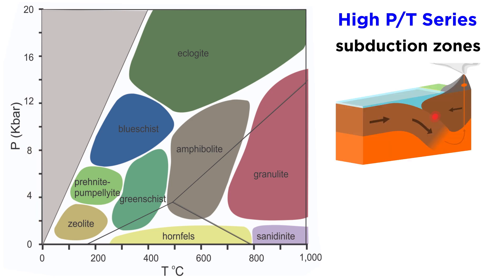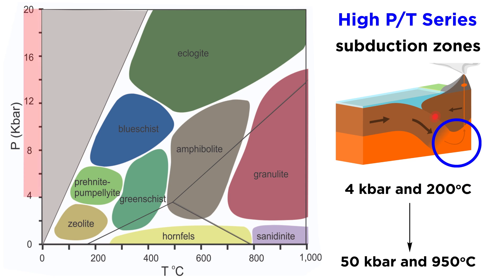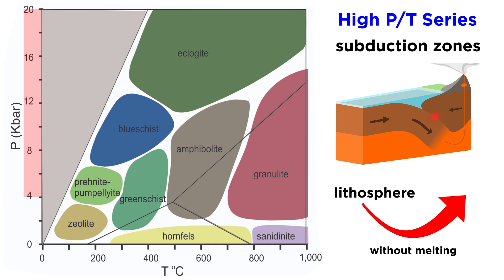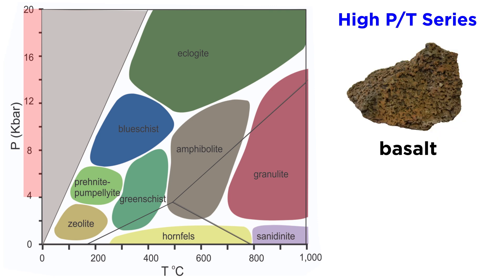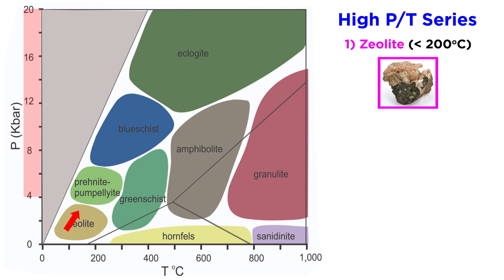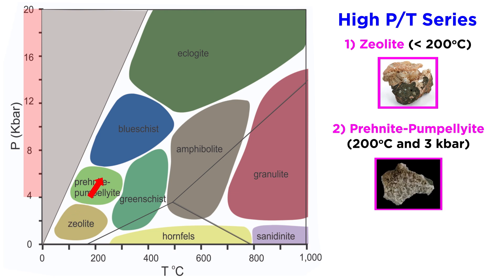The high-PT series mainly occurs in subduction zones, where cold oceanic lithosphere is brought to great depths where the temperature would normally be much higher. In these environments, PT conditions can range from 4 kilobars and 200 degrees Celsius all the way up to 50 kilobars and 950 degrees Celsius, which is equivalent to a depth of 170 kilometers. This means that pieces of oceanic lithosphere are capable of being subducted to this incredible depth and later returned to the surface without melting. Like with orogenic metamorphism, we begin with the zeolite facies, and then move through the prehnite-pumpellyite facies.